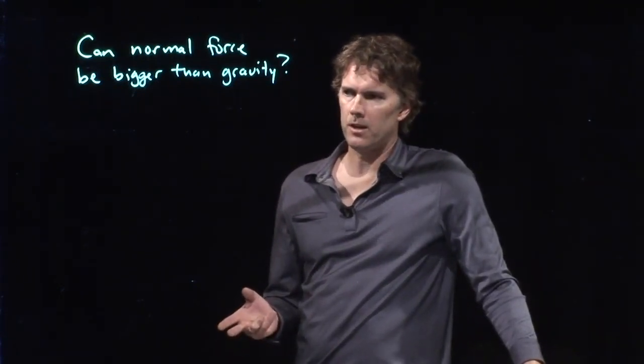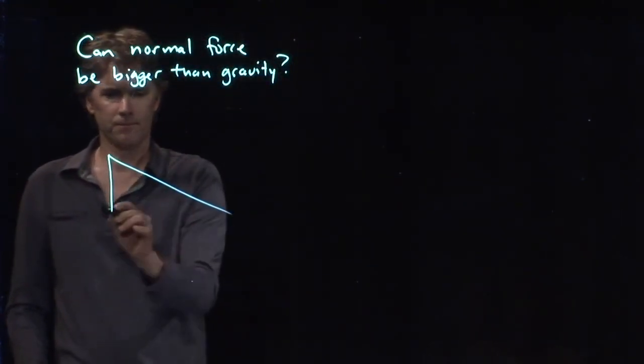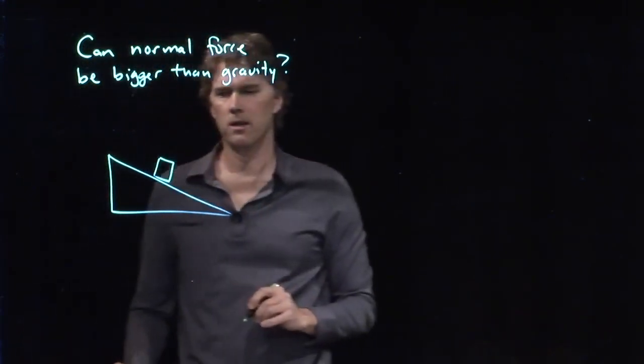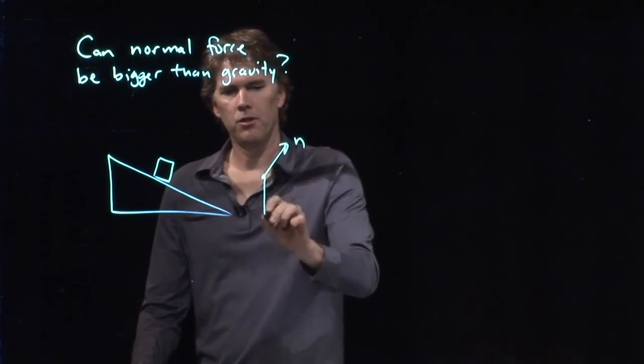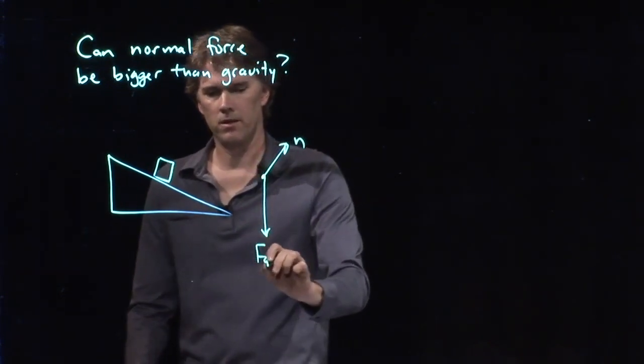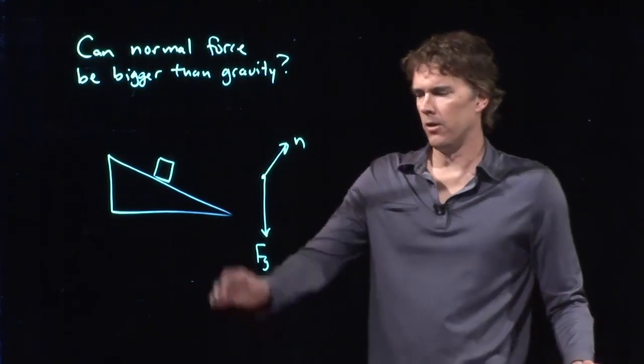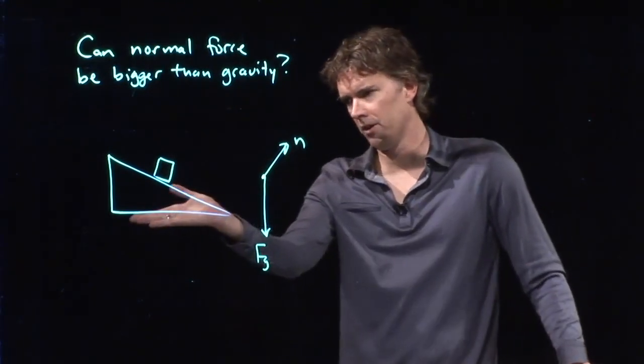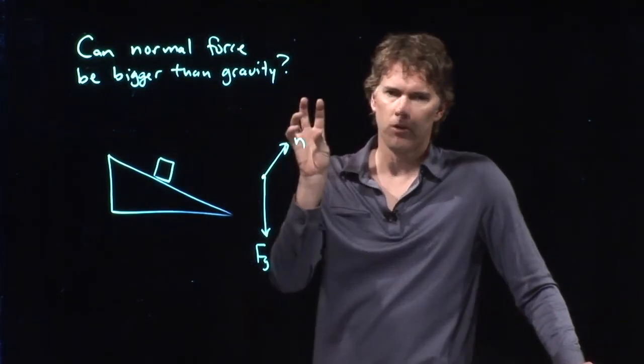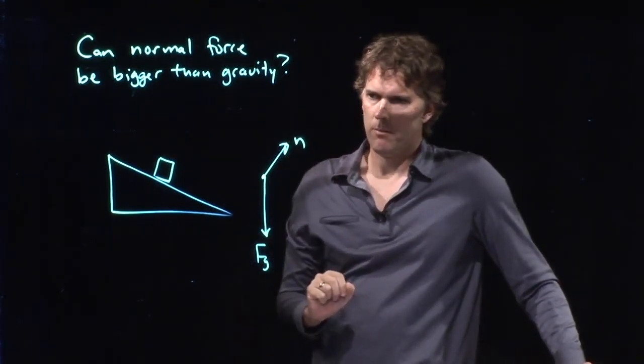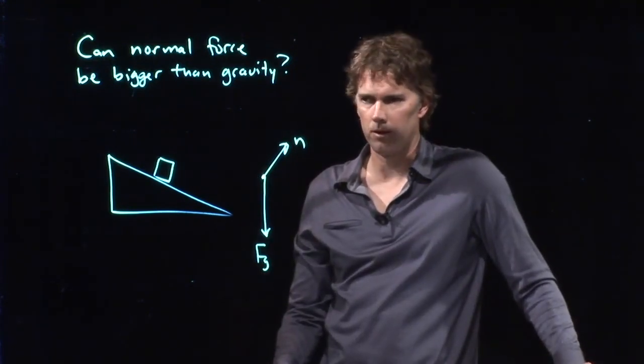What we just saw is that when you're on an inclined plane and you have an object, the normal force n is smaller than gravity. So if it's equal to gravity at the horizontal and gets smaller as I tip it up, that thing is always less than gravity. But can you have a situation where the normal force is in fact bigger than gravity?